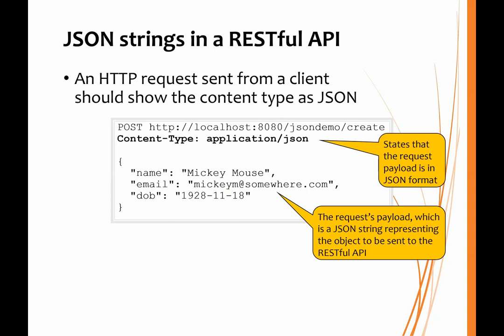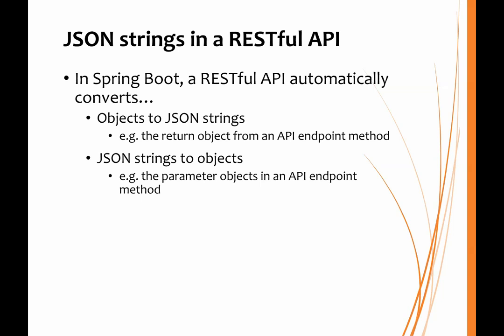JSON strings are very useful for a RESTful API. We've got an HTTP POST request targeting the create endpoint. The content-type property identifies the payload as being in JSON format, which tells the API that the payload needs to be interpreted as a JSON string. The payload is a JSON object representing Mickey Mouse. The nice thing about Spring Boot is that the RESTful API will automatically convert outgoing objects to JSON strings and incoming JSON strings to objects, which makes our programming easier.